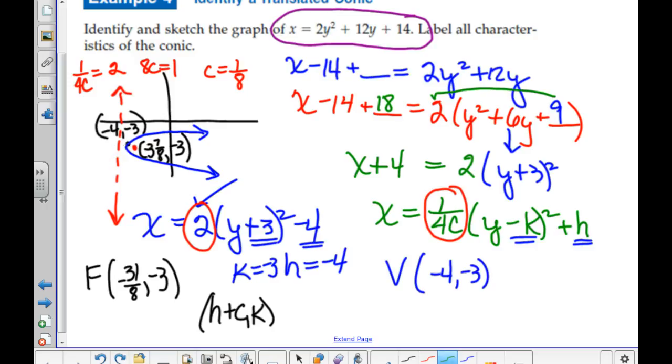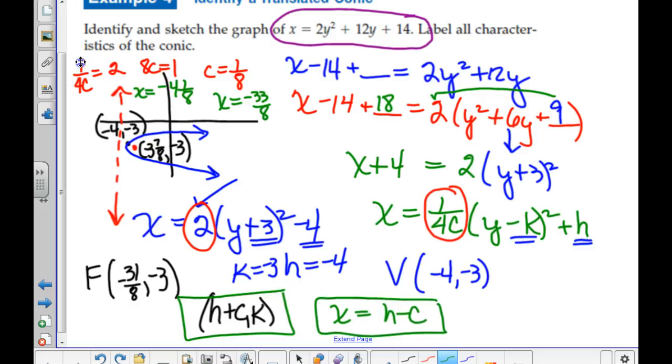And the directrix is back here an eighth of a unit. If it was at negative 4 when we moved another eighth over, it'd be negative 4 and 1 eighth. Or X equals negative 33 eighths. So, eventually, we got answers. Either one of those green equations up there, and either this foci or this guy down here. That was more fun than we needed to have.